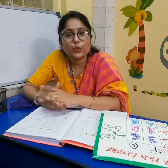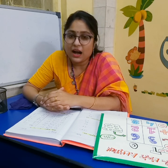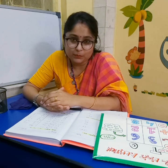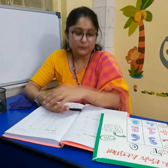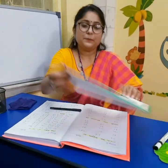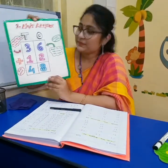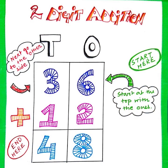So you have already learned how to add single digit numbers. Now let's come to double digit numbers — that means two-digit numbers. See this chart. We have to write the number like this: T and O. And we have to start from the ones column, then shift to the tens column.